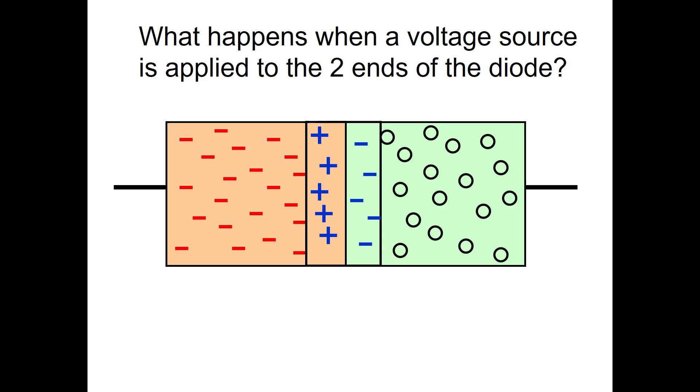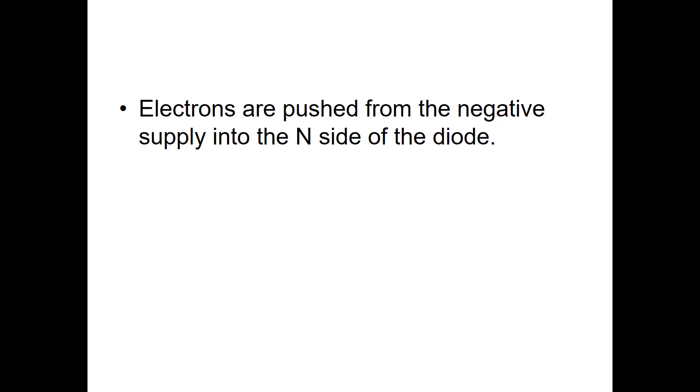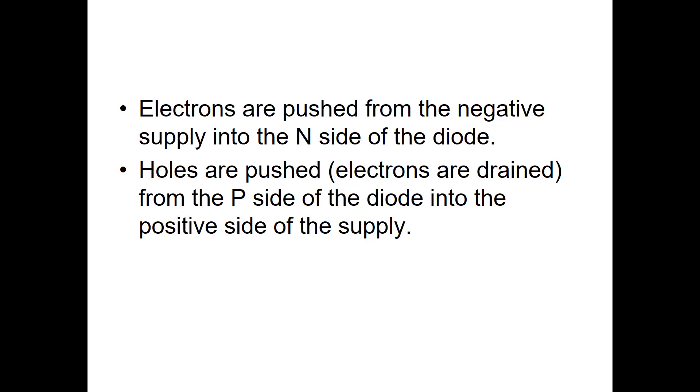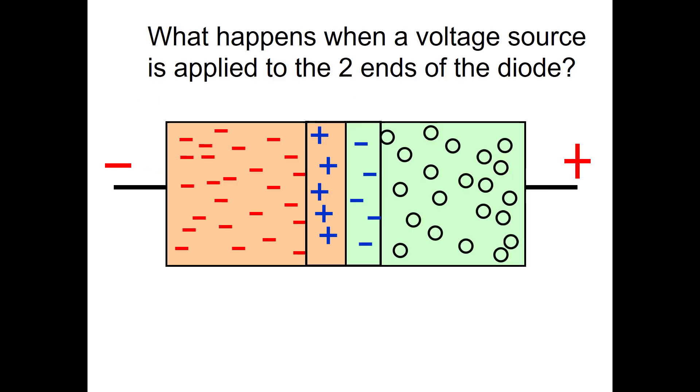Now we will discuss the first type of electronic component built out of this N-type and P-type material, and that's a diode. What happens when a voltage source is applied to the two ends of the diode? Electrons would be pushed from the negative supply into the N side of the diode. Holes would be pushed from the P side of the diode into the positive side of the supply. The positive pushes extra holes in. The negative pushes extra electrons in. You could think of the holes as electrons being drained from that side.